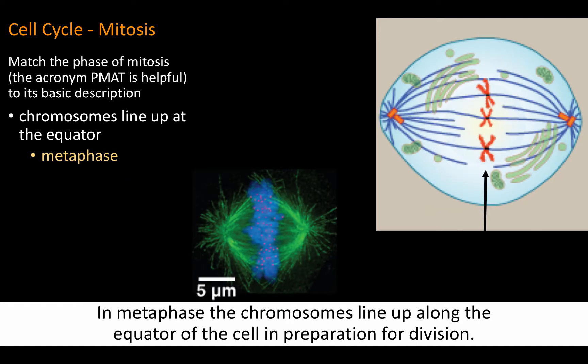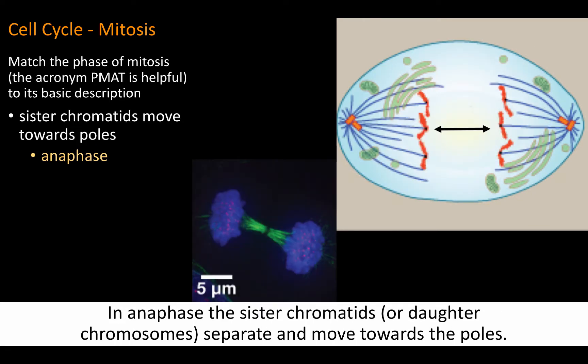In metaphase, the chromosomes line up along the equator of the cell in preparation for division. In anaphase, the sister chromatids, or daughter chromosomes, separate and move towards the poles.